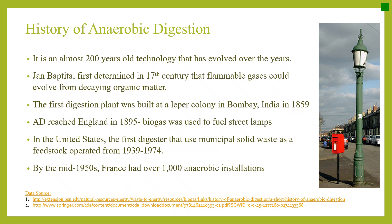Let's look at the brief story of anaerobic digestion. It is an almost 200-year-old technology that has evolved over the years. Genpakista first determined in the 17th century that flammable gases could evolve from decaying organic matter. The first digestion plant was built at a leper colony in Bombay, India in 1859. It reached England in 1895 and biogas was used to fuel the street lamps. In the United States, the first digester that used municipal solid waste as feedstock operated from 1939 to 1974.